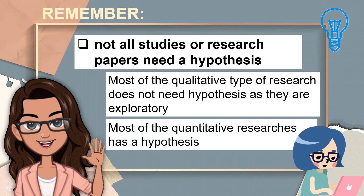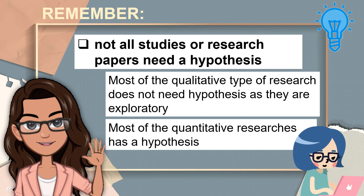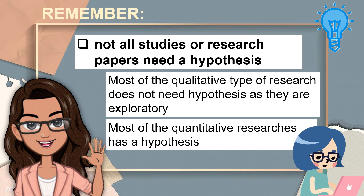Most of the quantitative researches, on the other hand, have a hypothesis. The best example is the experimental type of research where the researcher needs to test if one variable is affecting the other or if they have a significant relationship. If the study you are planning to do does not require a hypothesis, it should not stop you from learning the basics of a hypothesis — knowing when to include it and how to compose it.